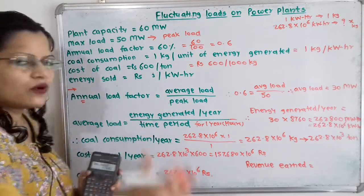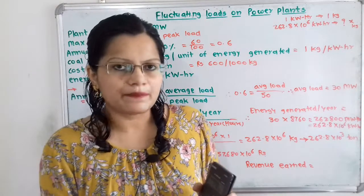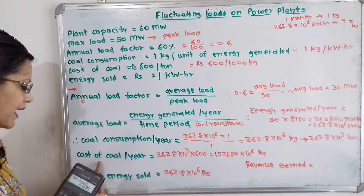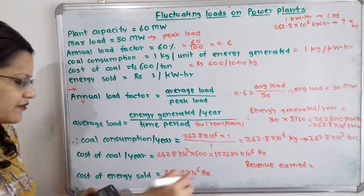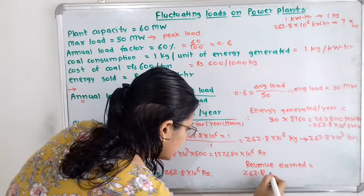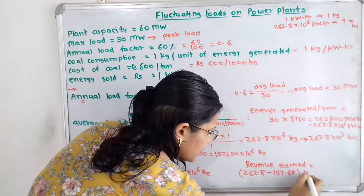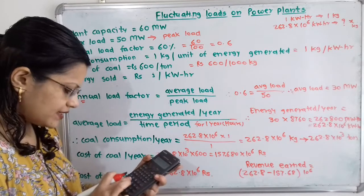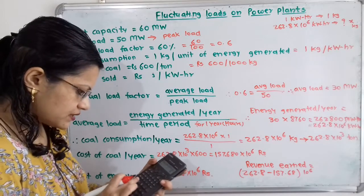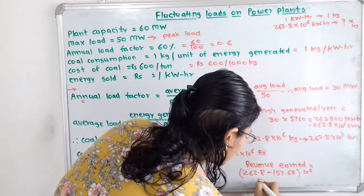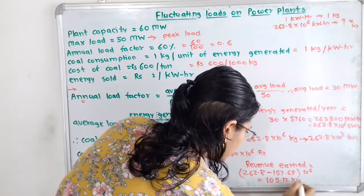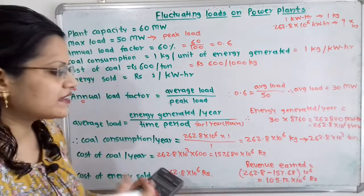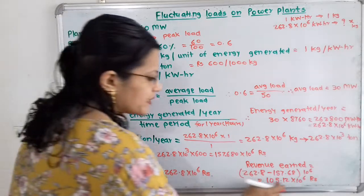Now we calculate the revenue earned: cost of energy sold minus cost of coal purchased. That is (262.8 − 157.68) × 10⁶ rupees, which equals 105.12 × 10⁶ rupees. This can also be written as 10,512 × 10⁴ rupees. This is the annual revenue earned by the power plant.